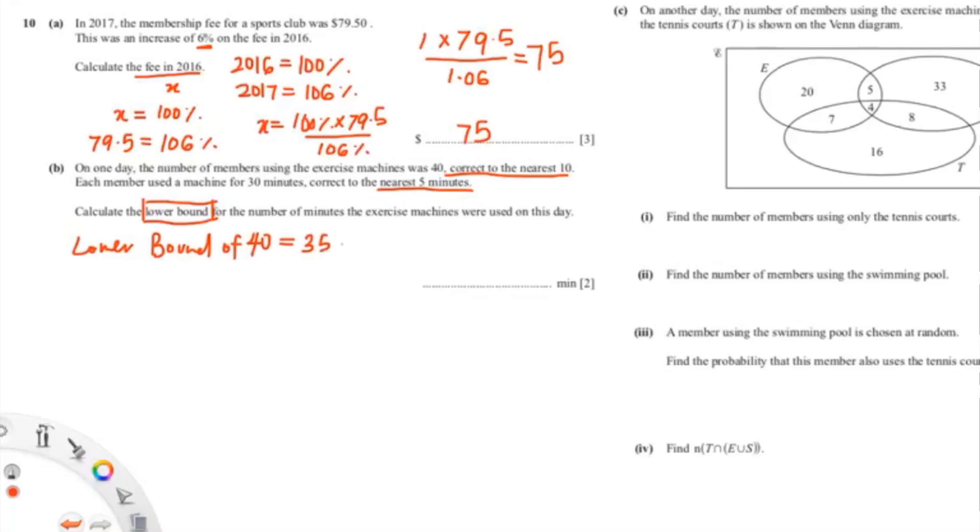And the lower bound for 30, correct to the nearest 5, would be 27.5, because half of 5 is 2.5. So 30 minus 2.5 gives you 27.5.